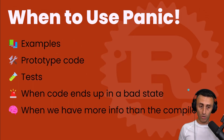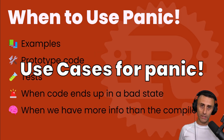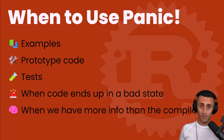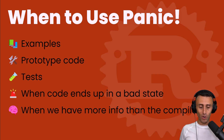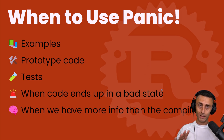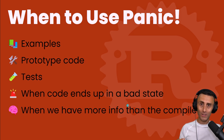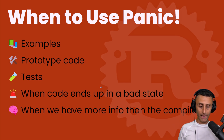When should we use the panic macro? There are some use cases: one is in examples when we are doing a prototype of a bigger application but we want just to get started; another is for tests — which is a spoiler, we will see this later; also when the code ends in a very unexpected way; and when we have more information about the code than the compiler, for some human logic we are applying.